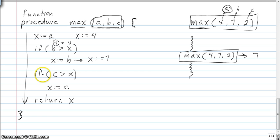Okay, then we've got another if statement. If C, which is 2, if 2 is greater than X, which is now 7, that's not true. 2 is not greater than 7, so we don't worry about that. Don't worry about that.